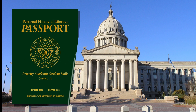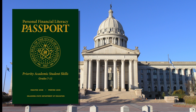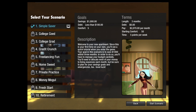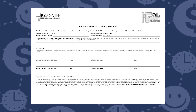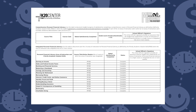Enacted by Oklahoma House Bill 1476, Oklahoma students must successfully complete all 14 objectives in order to graduate with a standard diploma. Each of the 10 scenarios in MYLB relates to one or more of the 14 standards, and completing all 10 rewards the student with a certificate of completion fulfilling the state requirements.